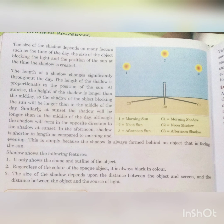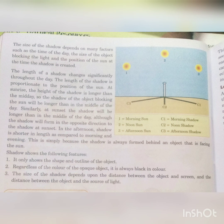Shadow shows the following features: it only shows the shape and outline of the object. Regardless of the color of the opaque object, it is always black in color — shadow hamesha black color ka hota hai. The size of the shadow depends upon the distance between the object and the screen, and the distance between the object and the source of light.